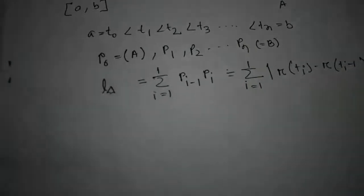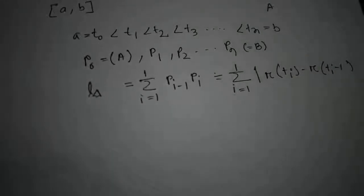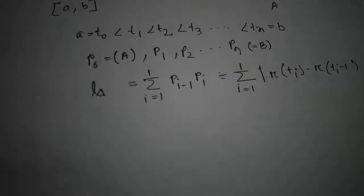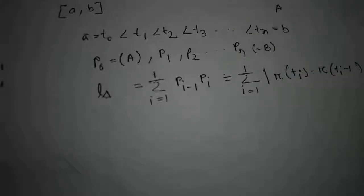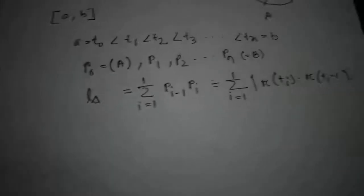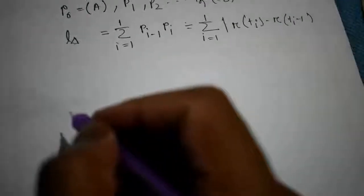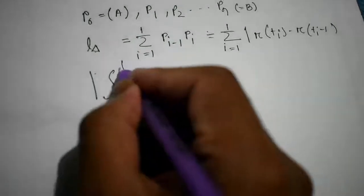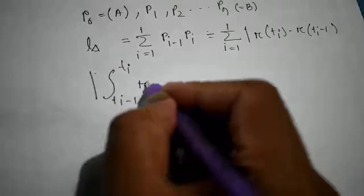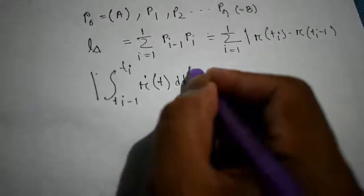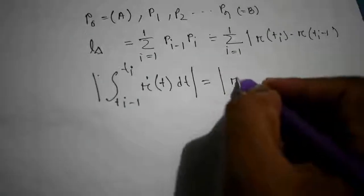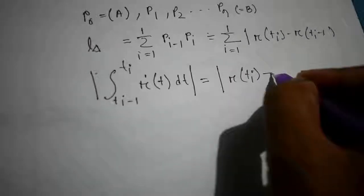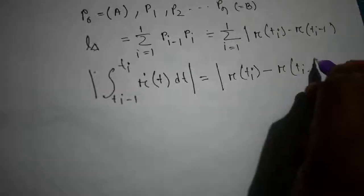Now we know that the sum of two sides of a triangle is greater than the third side. So if we increase the number of points of the subdivision, the length of the polygon will increase. Let delta be all possible subdivisions of [a, b]. Then we know that the integral from tᵢ₋₁ to tᵢ of |ṙ(t)| dt gives |r(tᵢ) - r(tᵢ₋₁)|.